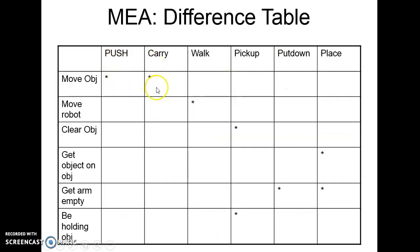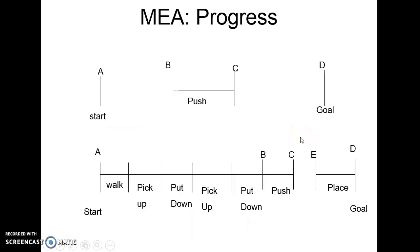To summarize the operations: to move an object, either push it or carry it. To move the robot, use walk. To clear an object, pick up items from the top of it. To put one object on top of another, use the place operation. To free the robot's arm, put down or place something. To hold an object, use pick up. In means and ends analysis, we have goals, we break those goals into sub-goals, and then we use the available means or operations to meet those goals.